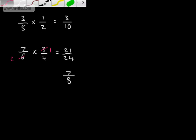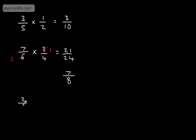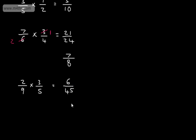Let's do another multiplying example: 2 over 9 multiplied by 3 over 5. We could cancel the 9 and the 3, or we could just multiply the numerators to get 6, multiply the denominators to get 45, and then simplify. Both divide by 3, so we'd have 2 over 15, and that's in its simplest form.